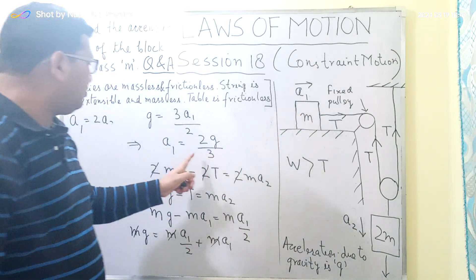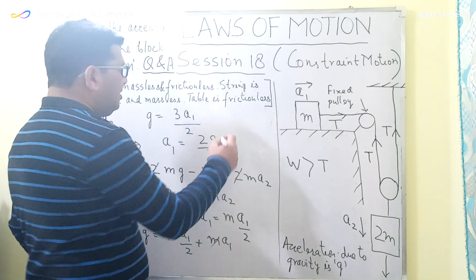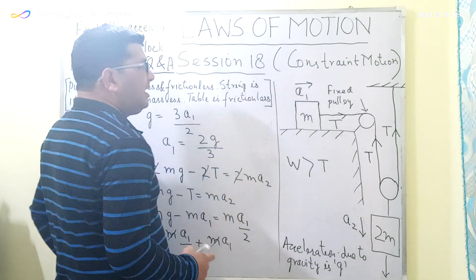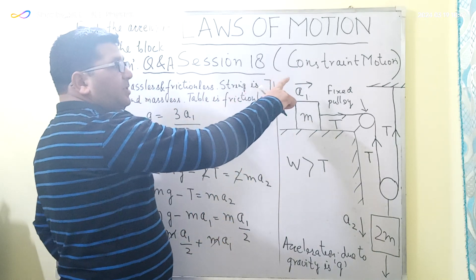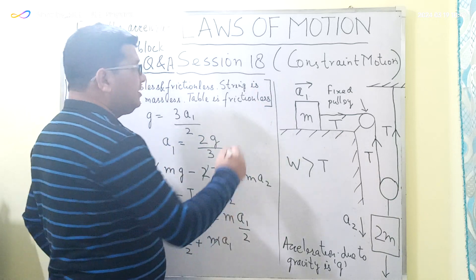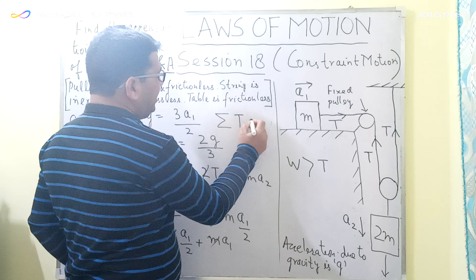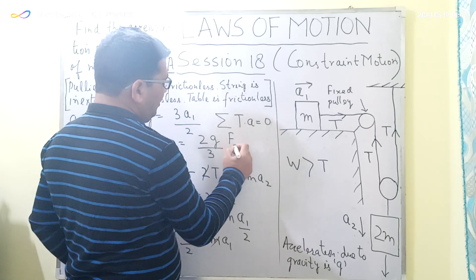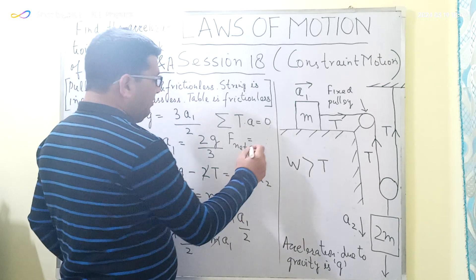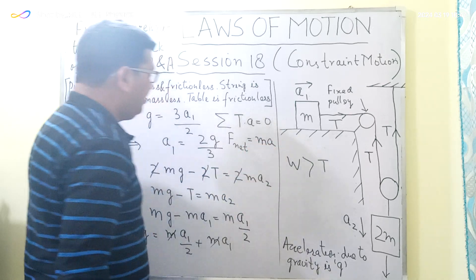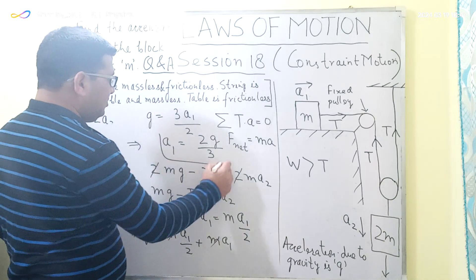The acceleration of the block of mass M is equal to 2G/3. In this question we used two constraint motion equations: the summation T·A = 0, and the net force on each individual block equals M times A. I hope you have understood the solution.